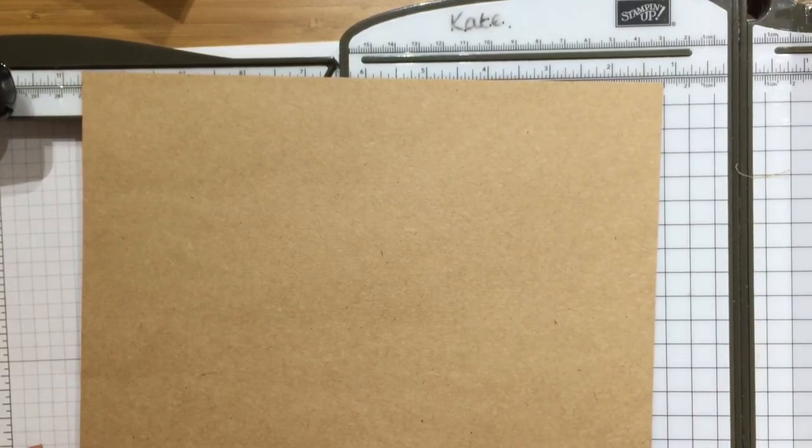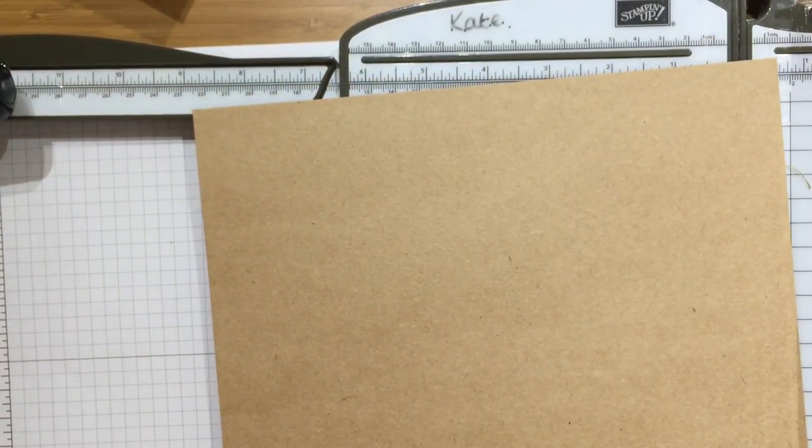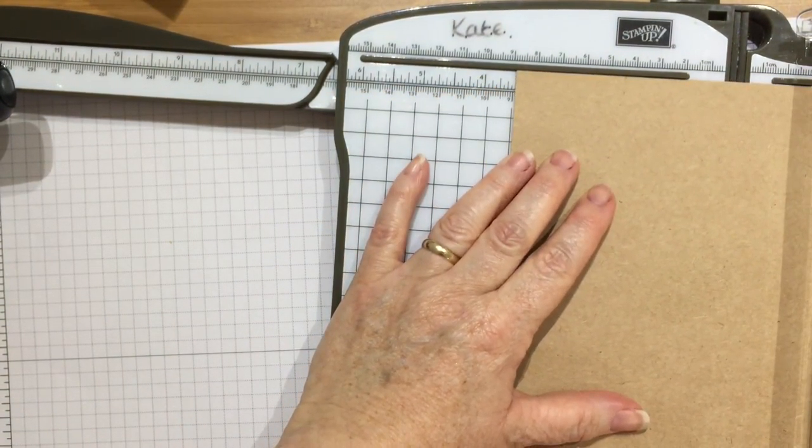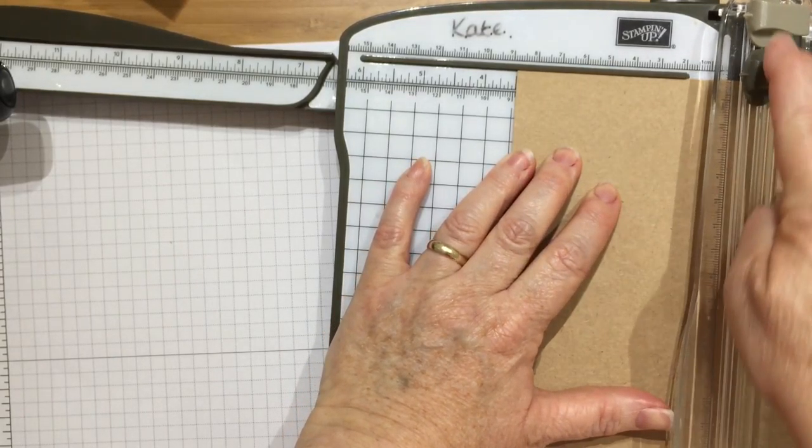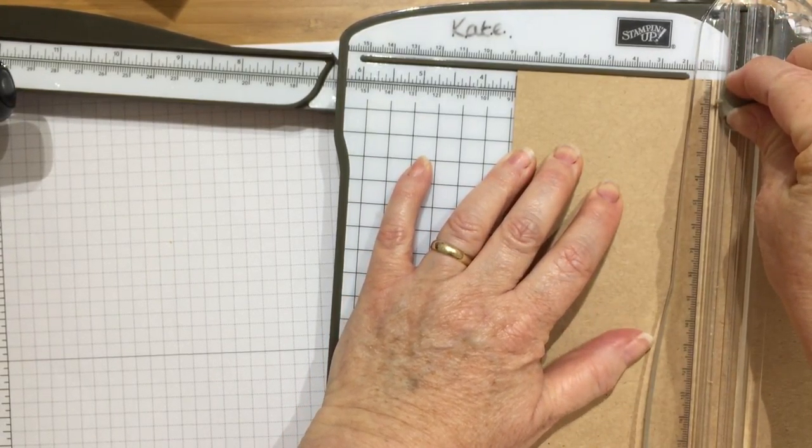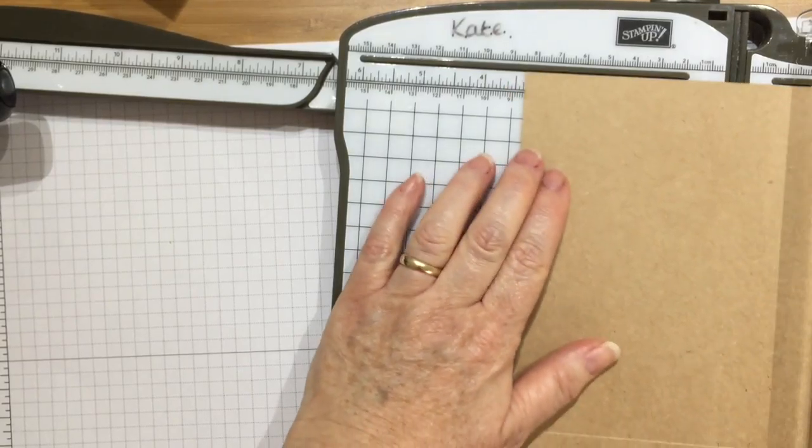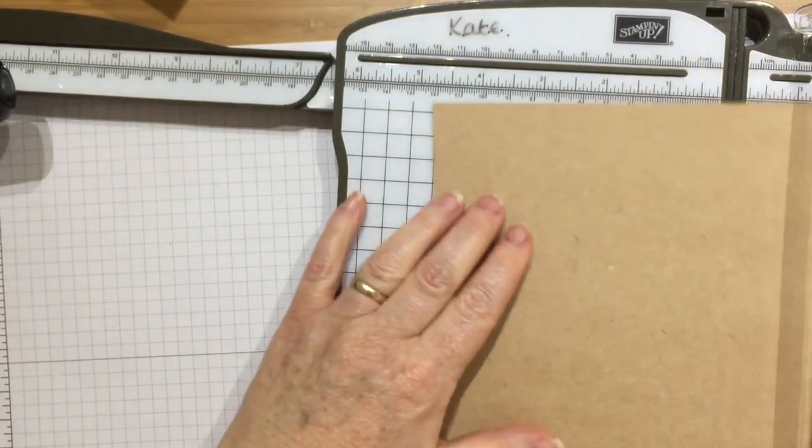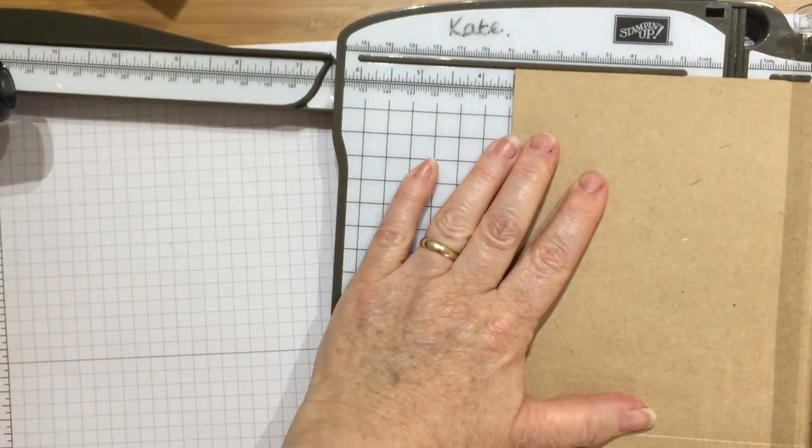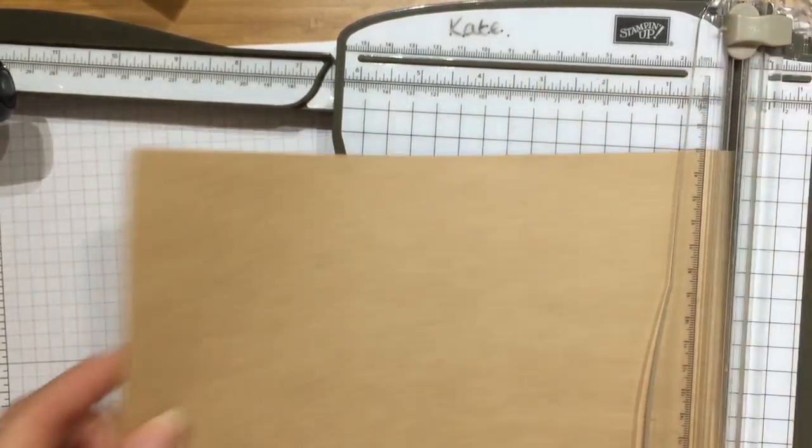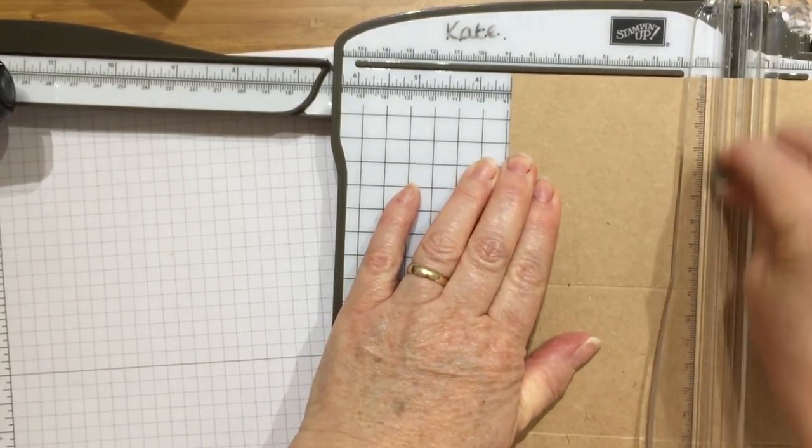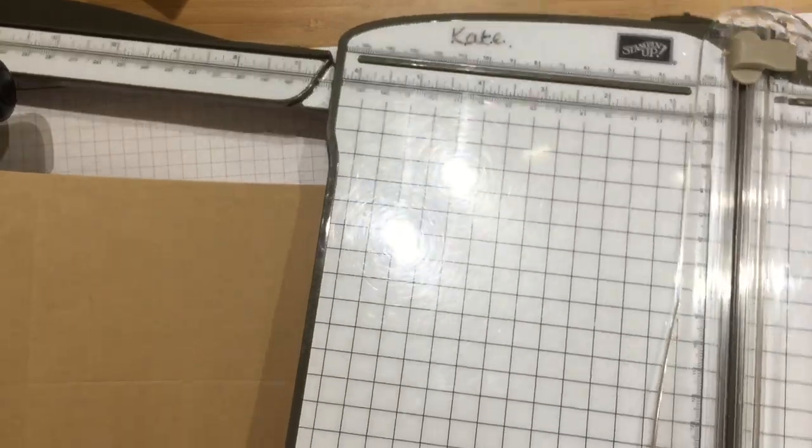I'm going to score my lines now. The depth of the box is three and a half inches, so I'm going to score all the way around with my scorer at three and a half inches. I'm going to move my trimmer out of the way.